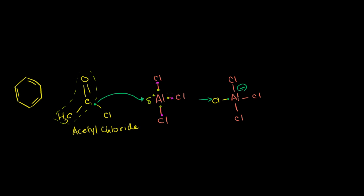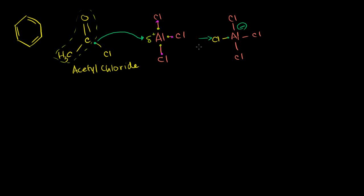Now what was formerly the acetyl chloride has lost the chloride. So it's now really just an acyl group — the carbonyl bonded to a CH₃ methyl group. This guy lost his electrons, so now he has a positive charge. This is not that stable and it's actually highly reactive — it's a very good electrophile. It wants to steal other people's electrons. But it can exist for a short amount of time, especially because it is resonance stabilized.